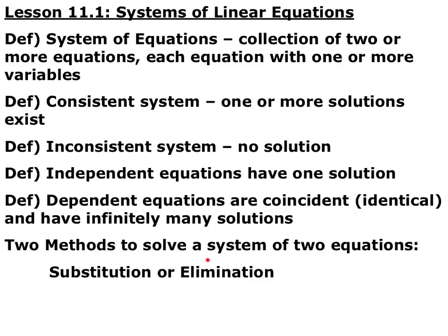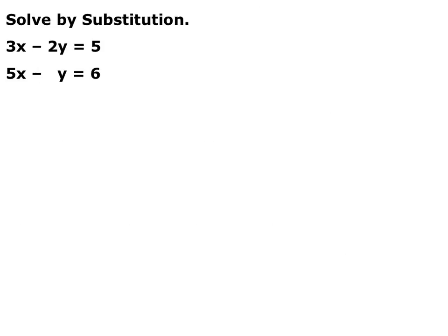Right now we have two methods of solving systems of two equations, or when we get into systems of three equations: substitution and elimination. First we're going to talk about solving a system by substitution. When you solve by substitution, you solve for one term that exists in both equations and substitute into the other equation. Here we have a system: 3x minus 2y equals 5, and 5x minus y is equal to 6.